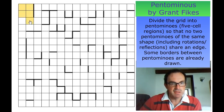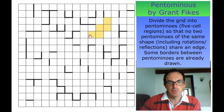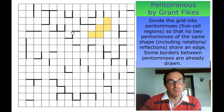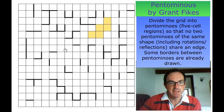They have to be five orthogonally connected cells — there are 12 different ways of constructing five cells — and you can use our software to draw them into the grid. The only other rule, apart from populating the grid with five-cell regions, is that two regions of the same type cannot appear orthogonally connected.